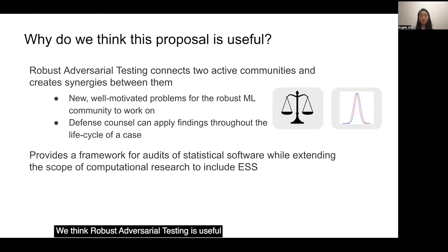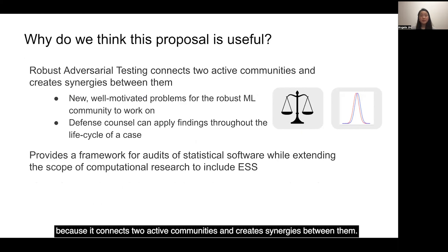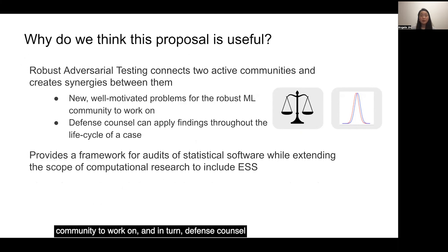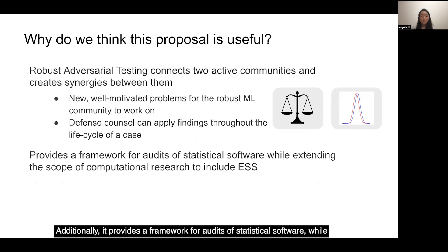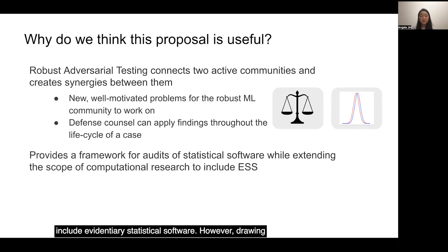We think robust adversarial testing is useful because it connects two active communities and creates synergies between them. For instance, it provides new, well-motivated problems for the robust ML community to work on, and in turn, defense counsel can apply findings throughout the lifecycle of a case. Additionally, it provides a framework for audits of statistical software while extending the scope of algorithm accountability research to include evidentiary statistical software.